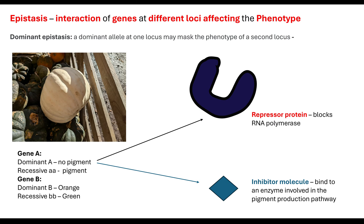The other possibility is that instead of producing a repressor protein, the dominant allele A — the one that is being expressed and interacting for those characteristics — results in an inhibitor molecule being made. If there's an inhibitor molecule being made, that is going to bind to an enzyme involved in the pigment production pathway and therefore affect the enzyme's shape. It could work in the same way as a non-competitive inhibitor, in that binding to the enzyme is going to change that tertiary structure and therefore the enzyme is no longer able to produce the pigment, affecting that pathway.